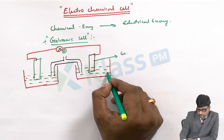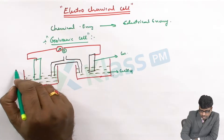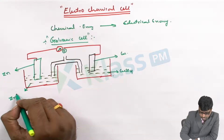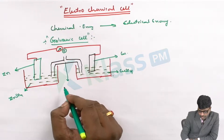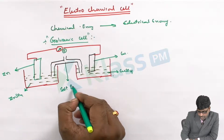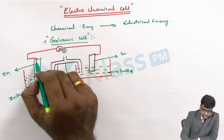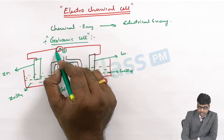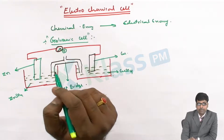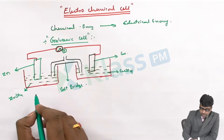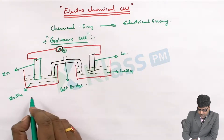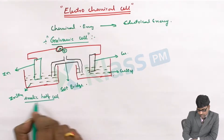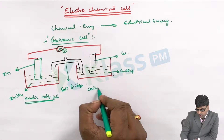This is a copper rod dipped in copper sulfate solution, and this is a zinc rod dipped in zinc sulfate solution. In between the connected part is called the salt bridge. These two electrodes are externally connected through a copper wire with a voltmeter in between. This part is called the anodic half cell, and this part is called the cathodic half cell.